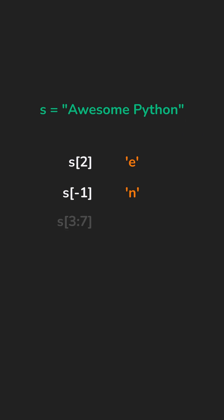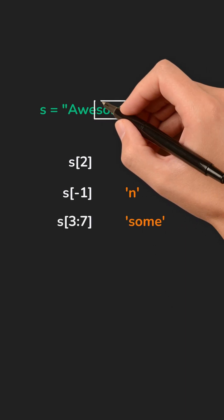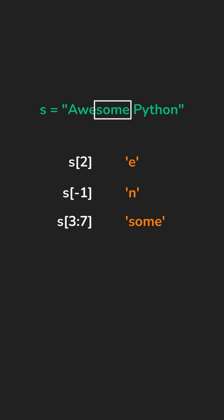Then we have slicing. It returns everything from start up to but not including stop. And with step, you can jump through the sequence, even with a negative step to reverse it.